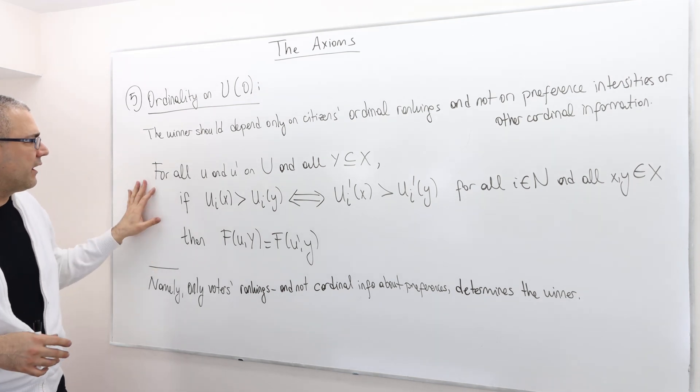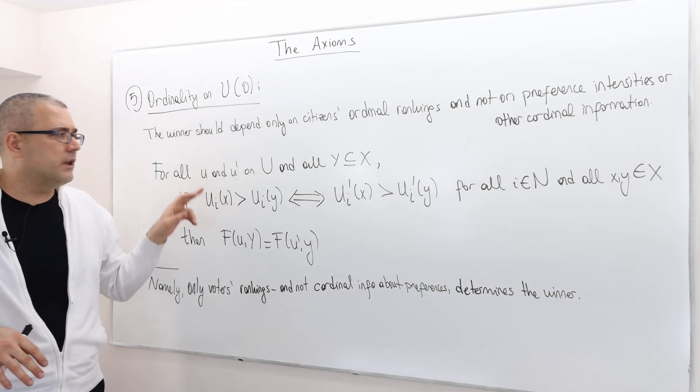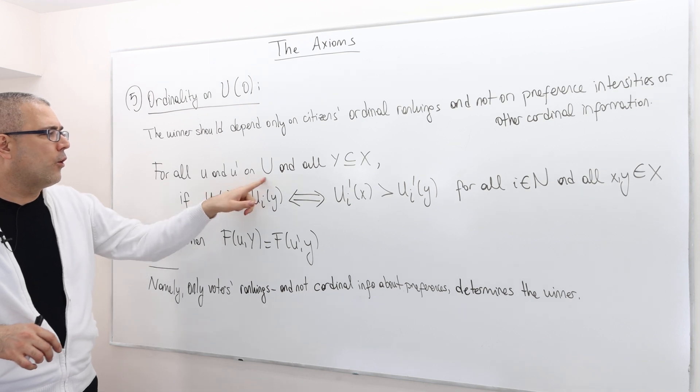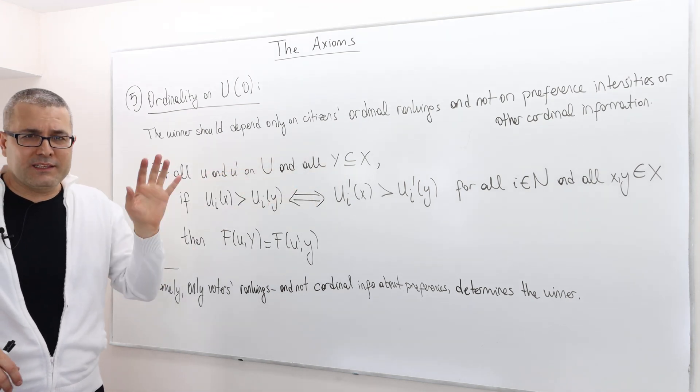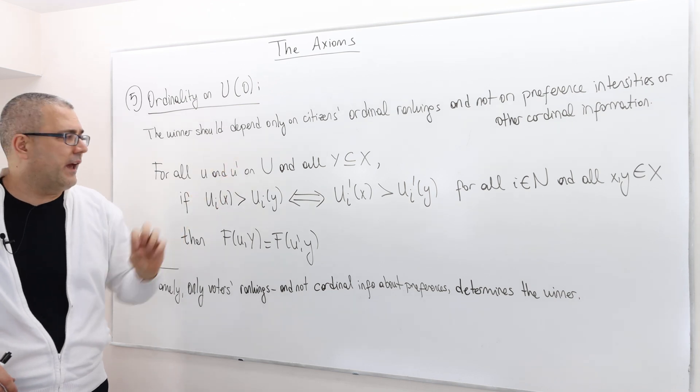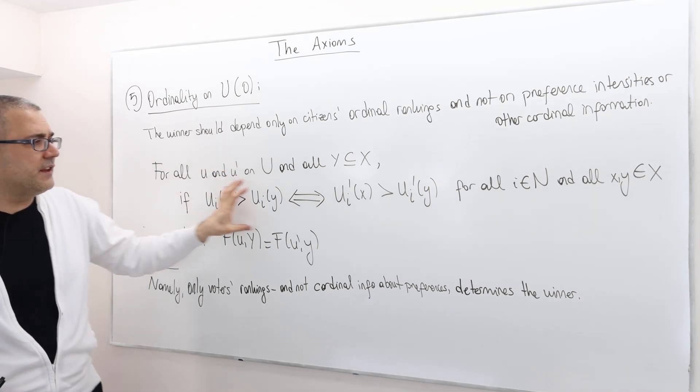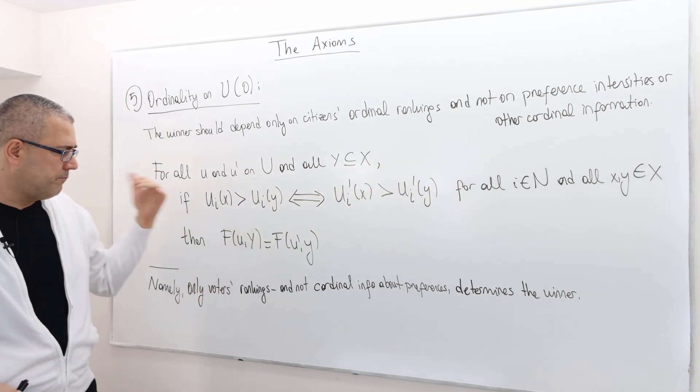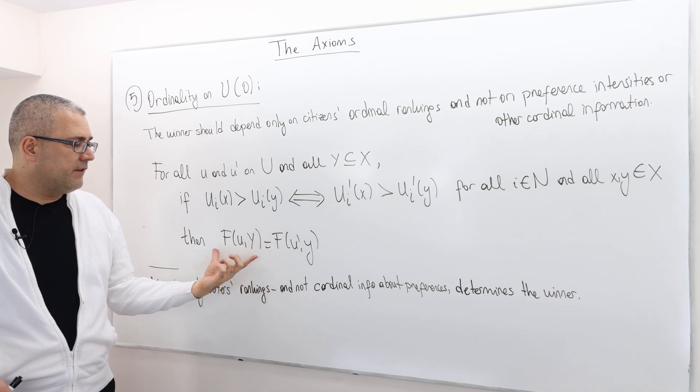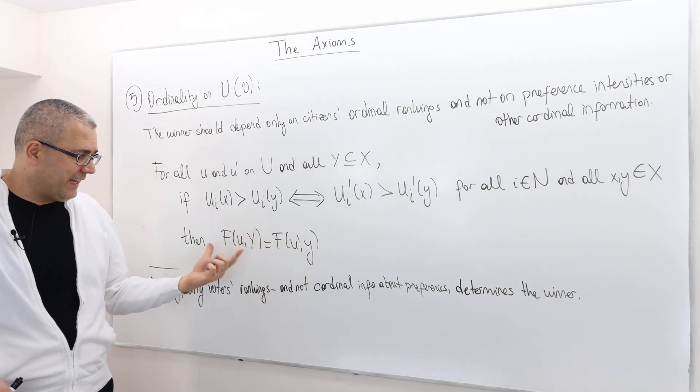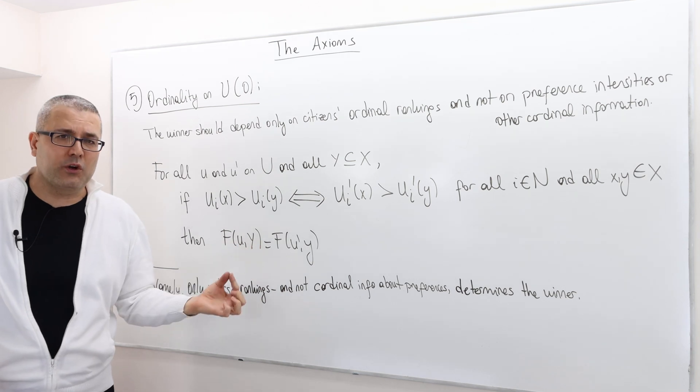Mathematically, how do we define that? For any two preference profiles U and U prime on our set of domains U, and for any Y, a subset of X, I have an if-then statement. If this condition holds, then the voting rule should select exactly the same alternatives under U and U prime.